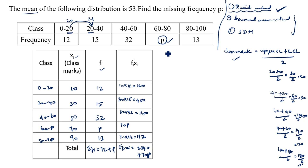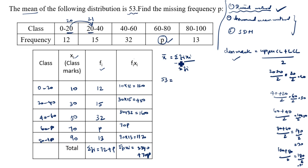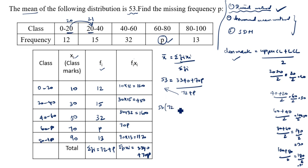Now we apply the direct mean method formula: x̄ = σfi·xi / σfi. Here x̄ = 53, σfi·xi = 3340 + 70p, and σfi = 72 + p. So: 53 = (3340 + 70p) / (72 + p).